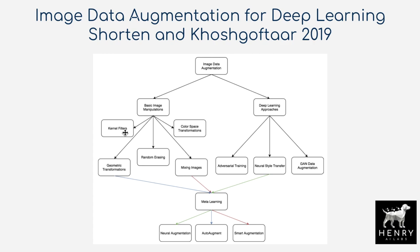Image augmentation techniques include kernel filters like Gaussian blur, geometric transformations like rotations, translations, horizontal flipping, shear x, color space transformations like brightness and gamma contrast, random erasing, and image mixing. Deep learning approaches include adversarial training, using an adversarial controller as a meta-learning scheme to guide augmentation hyperparameter sampling. Neural style transfer can also form augmentations, tested in stylized ImageNet distribution test sets.